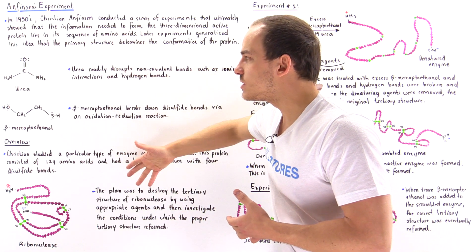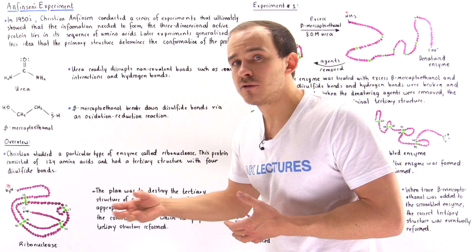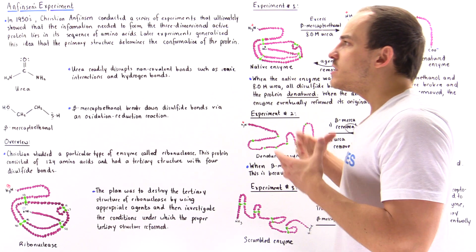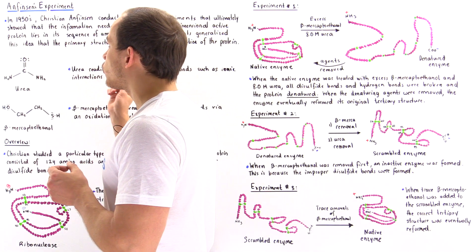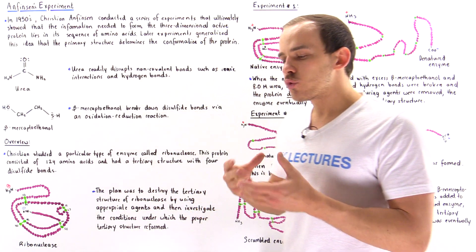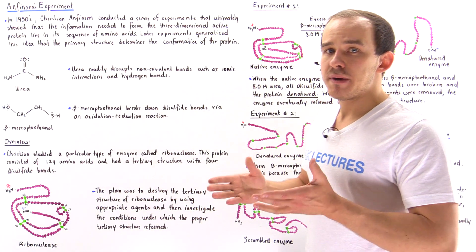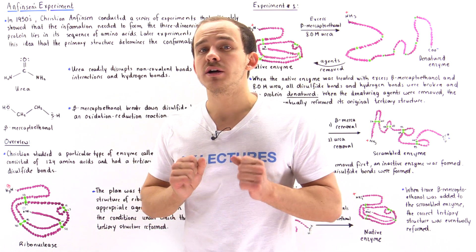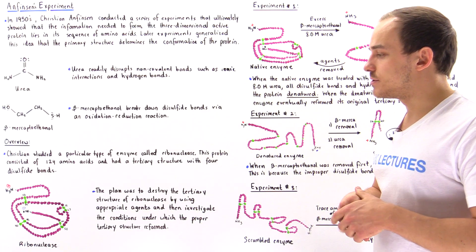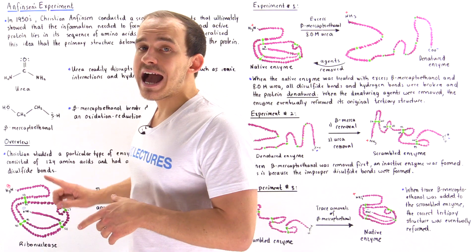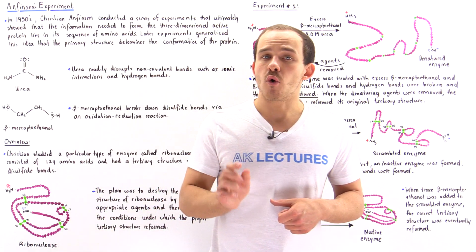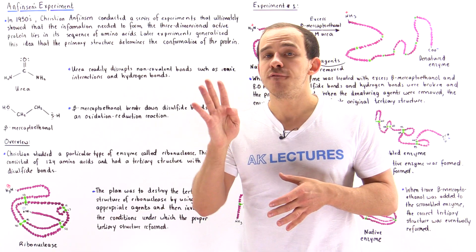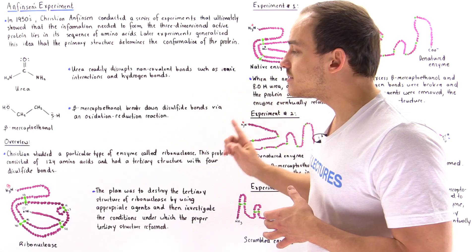Together, these two agents can be used to denature — to break down — the tertiary and secondary structure of our protein. The protein Anfinsen used was ribonuclease, an enzyme that catalyzes the breakdown of RNA molecules in cells. This particular protein has 124 amino acids in its primary sequence, and in its tertiary structure it contains four individual disulfide bonds.